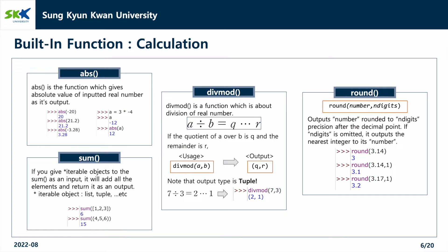Finally, the round function is the rounding function. It outputs a number rounded to n digits precision after the decimal point. If n digits is omitted, it outputs the nearest integer to its number.